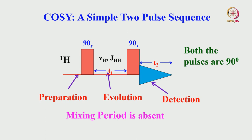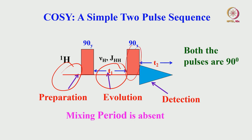The COSY experiment is a very simple two-pulse sequence. As I told you, for any 2D experiment we have a preparation period, an evolution period, a mixing period, and a detection period. The preparation period is where the nuclear spins attain thermal equilibrium. Then you apply a 90-degree RF pulse; during this period the nuclear spins evolve under chemical shift and J coupling. Afterwards you apply another 90-degree pulse — the detection pulse — and start collecting the FID at a fixed constant time period. Both pulses are 90-degree pulses, and you can apply them along x or y depending on your choice.